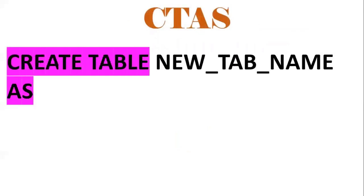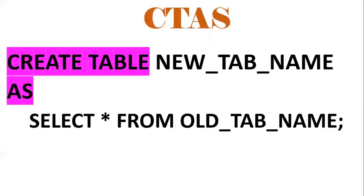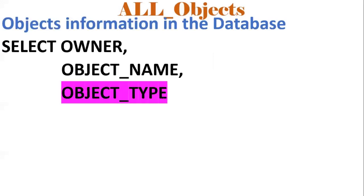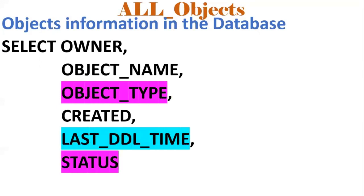The CTAS syntax is: CREATE TABLE table_name AS SELECT * FROM old_table_name — it creates a copy of the old table. Next is ALL_OBJECTS, which is one of the views provided by Oracle. Whenever any object like a procedure, package, or table is created, an entry is made in this view. Important columns include: owner, object name, object type — whether it is a procedure, function, or table — when it was created and last changed, and the status such as valid or invalid.